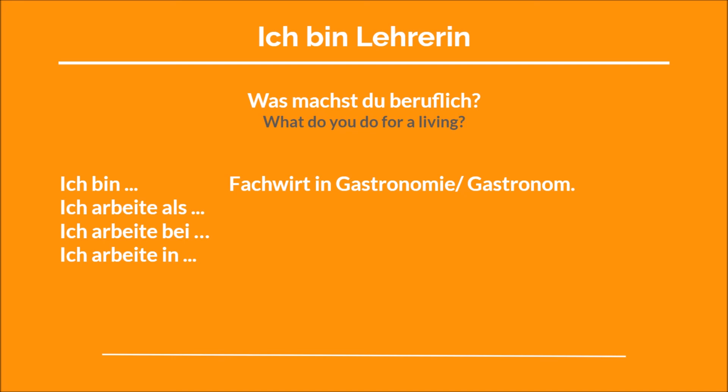The next expression is ich arbeite als, which is similar to ich bin, but you could be something else and work in a different role. So you could be a Gastronom but work as a waiter — ich arbeite als Kellner. You can also say ich arbeite bei to say where you work, for example ich arbeite bei McDonald's, or ich arbeite in einem Restaurant — I work in a restaurant. These are the key expressions for talking about your profession.